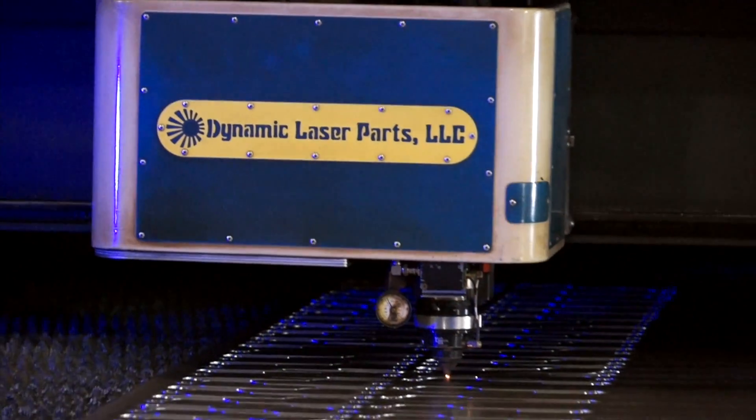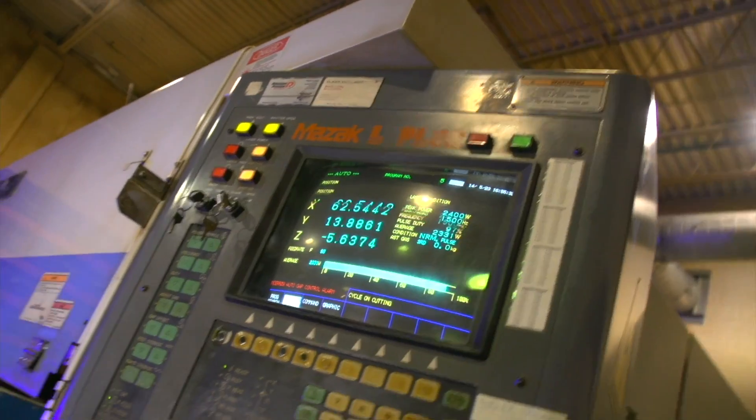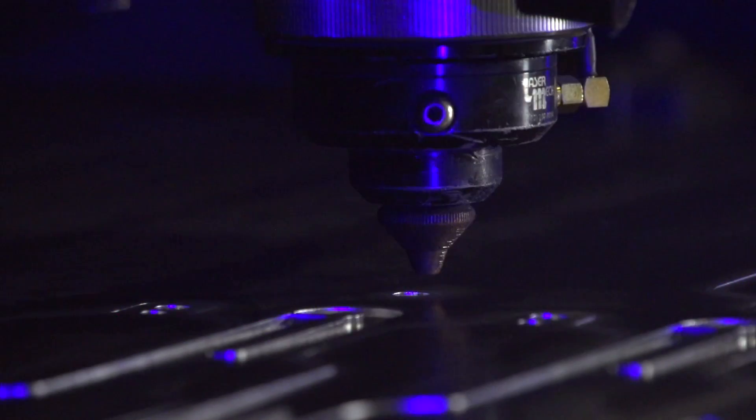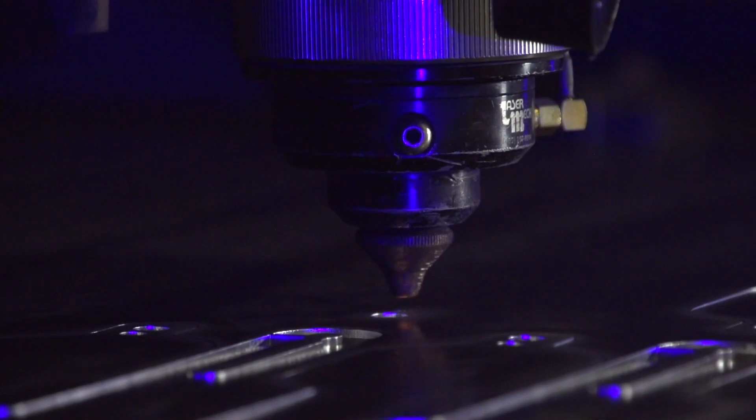We've got the ability to stencil your part number into the part. Or, if you would like your logo stenciled into the part, we can do that first before we cut the outside shape. Typically, what we'll do is we'll cut all the internal features first before we cut out the outside periphery of the part.